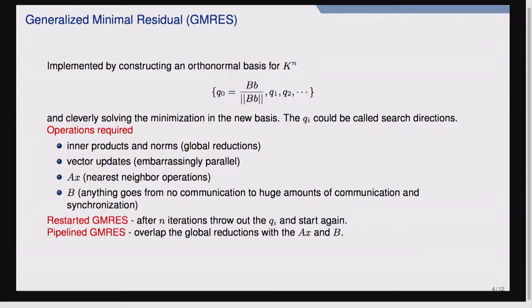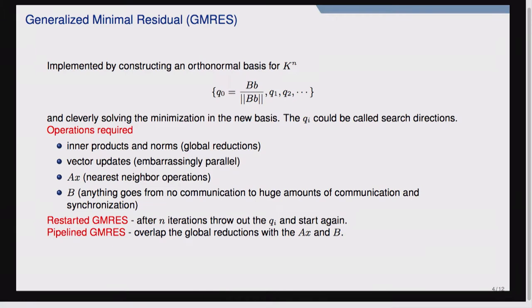The operations GMRES requires are: inner products and norms for orthogonalization and normalization — these require global reductions across the parallel machine; vector updates from orthogonalization, which are embarrassingly parallel with no communication; matrix-vector products, which for sparse PDE matrices require only nearest-neighbor communication; and application of the preconditioner B, which can range from no communication at all (e.g., block Jacobi) to a great deal of communication (e.g., algebraic multigrid).